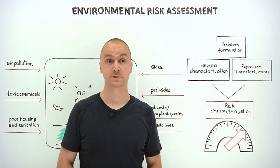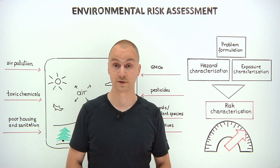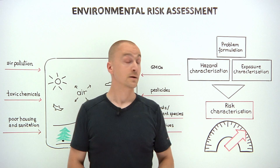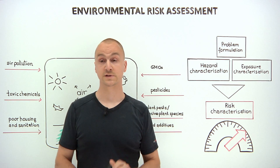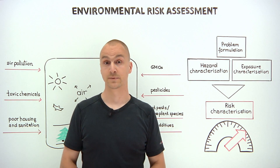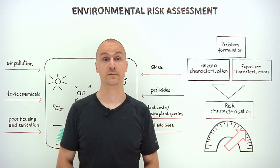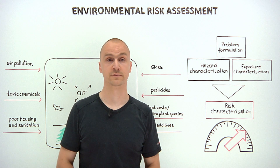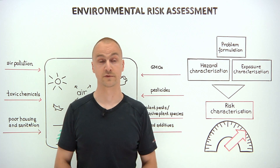These assessments follow several stages, beginning with problem formulation. Problem formulation is the first critical step because it defines the scope of the environmental risk assessment by specifying what needs to be protected from harm and by identifying potential harmful effects.